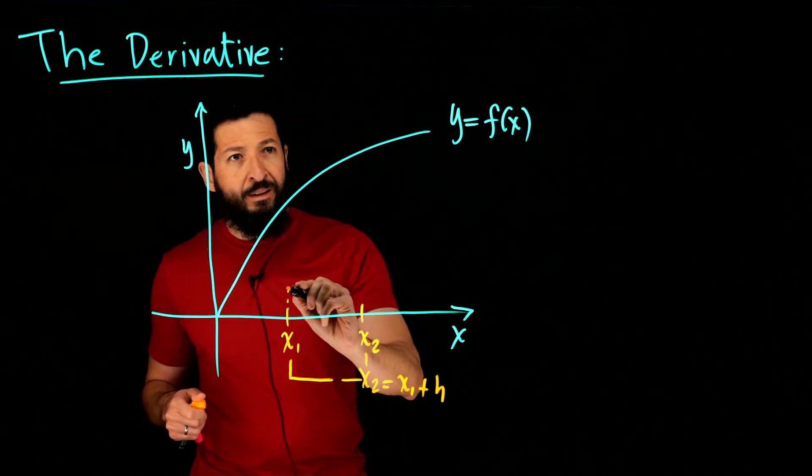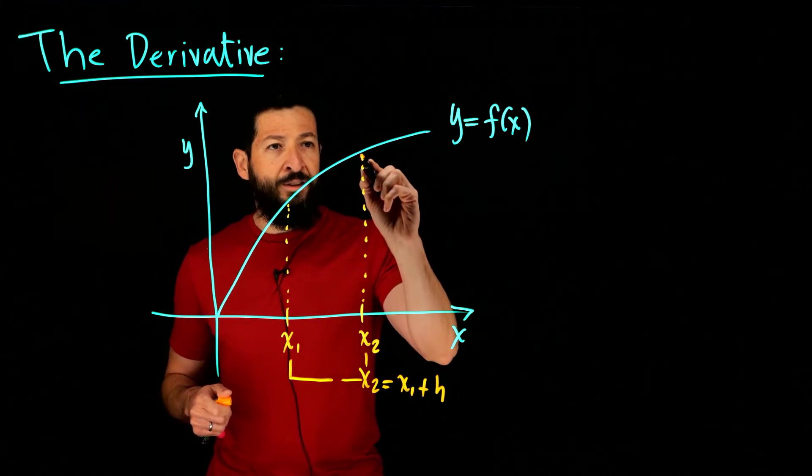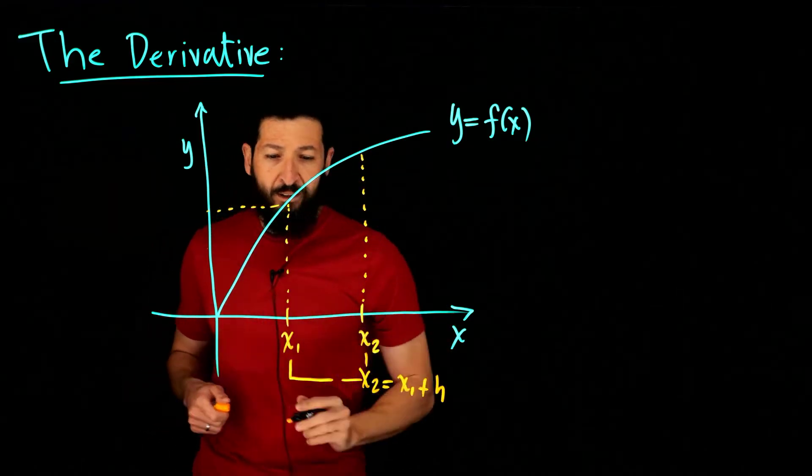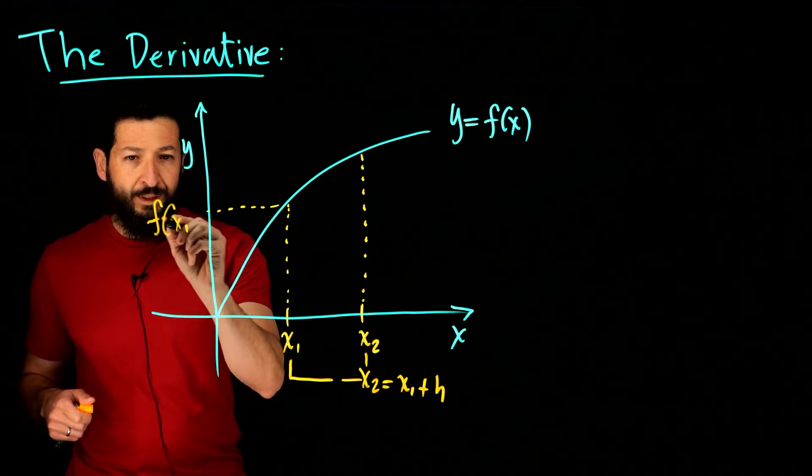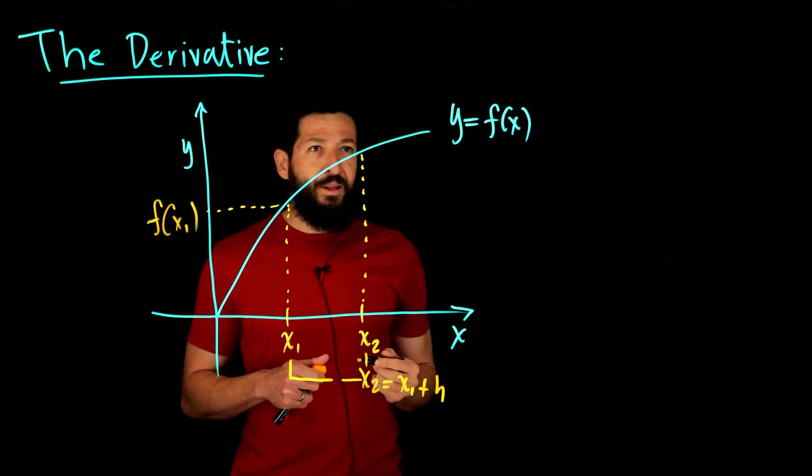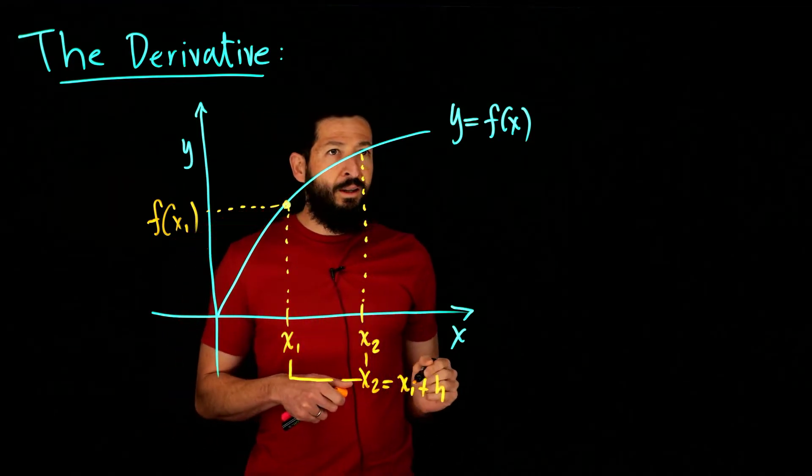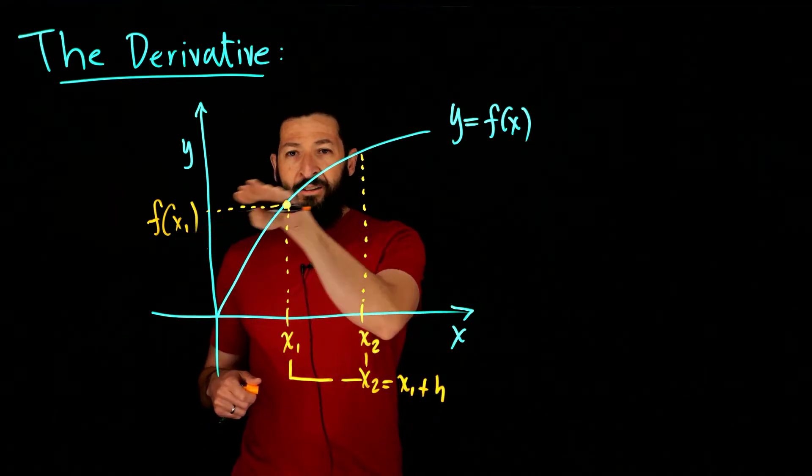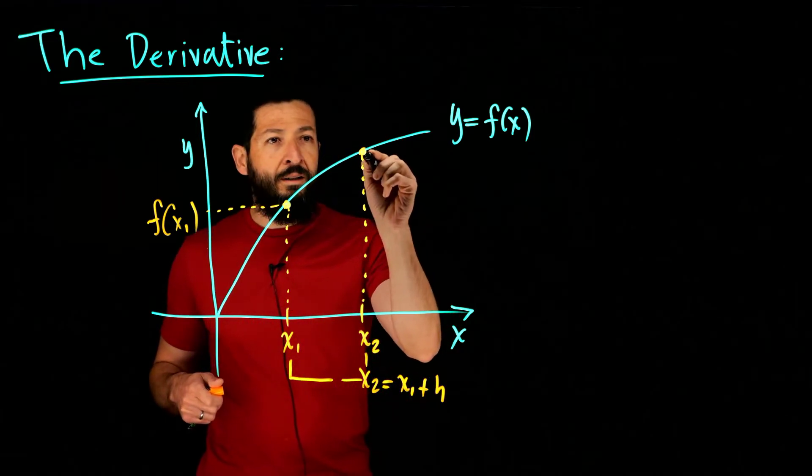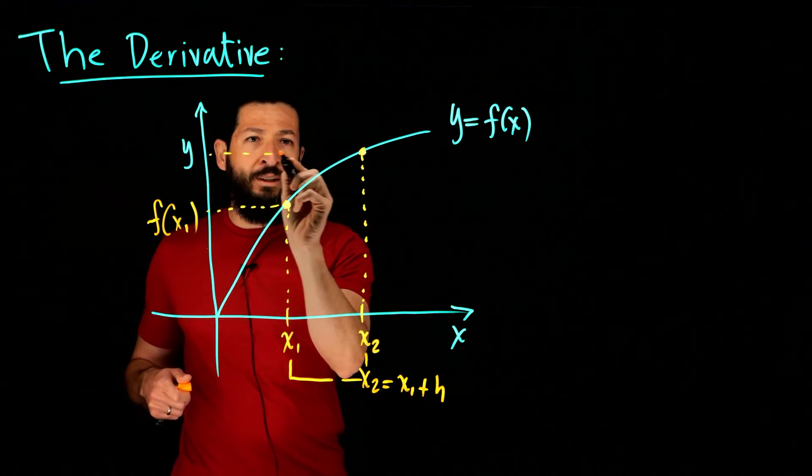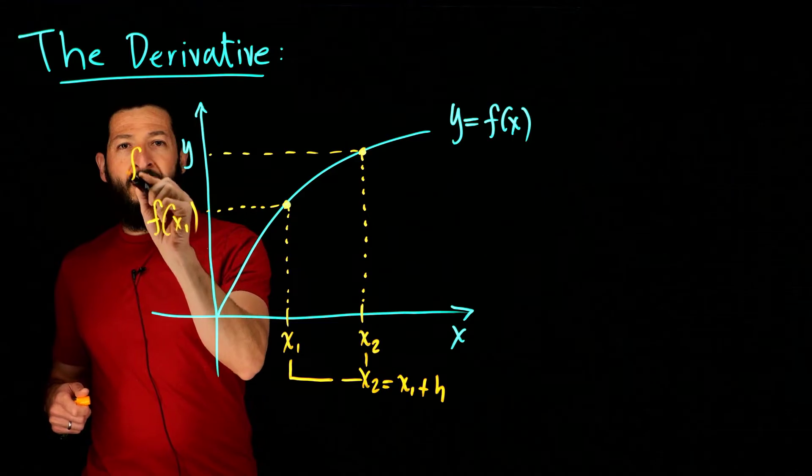Then we take a look at what happens when we evaluate the function at these two points. At the first one we get f of x1. We're evaluating x1, putting it in the function that gives us the point where the vertical line intersects the curve. Now here I get my other point, roughly here, and that's going to be f of x2.